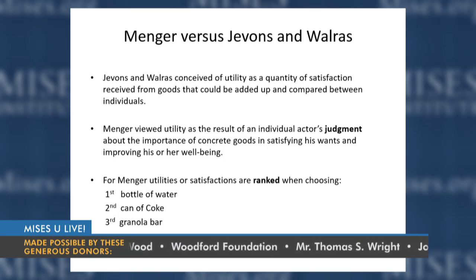There was a big difference between Menger and Jevons and Walras, both of whom were mathematical economists. They thought of utility as a quantity — a quantity of satisfaction that could be added up and compared between individuals. So if a bottle of water is worth five utils to me but ten to you because you're poorer, then the government should come in and take my bottle and give it to you. That was one implication of the mathematical approach to utility.